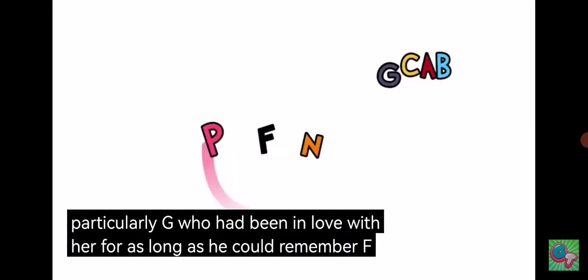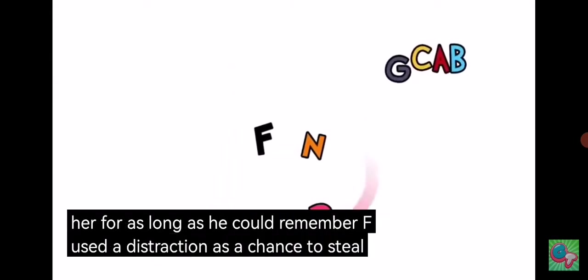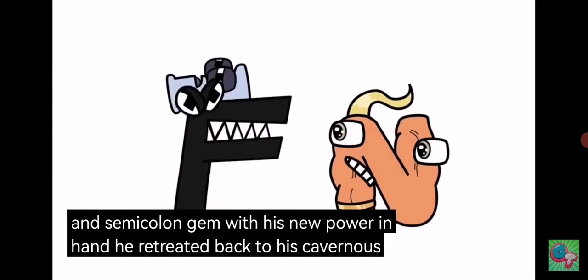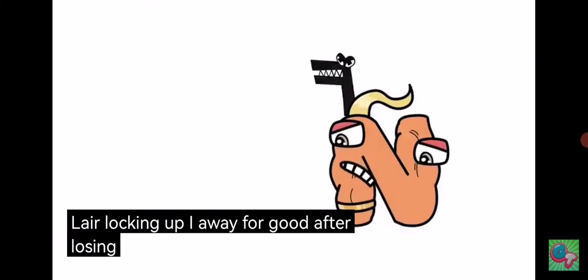F used the distraction as a chance to steal N's semicolon gem. With his new power in hand, he retreated back to his cavernous lair, locking up I away for good. After losing the semicolon crystal, N became normal once again.